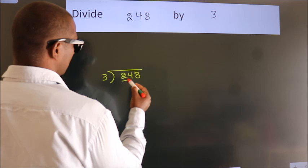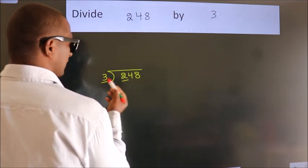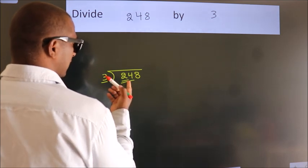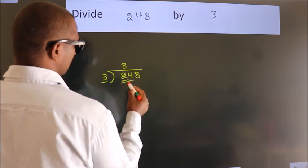Here we have 2, here 3. 2 is smaller than 3, so we should take 2 numbers: 24. When do we get 24? In the 3 table. 3 times 8 is 24.